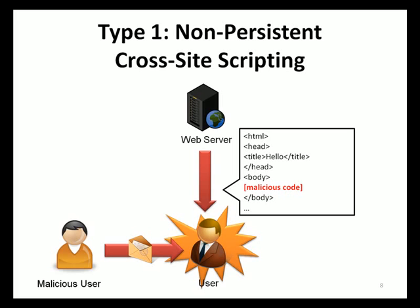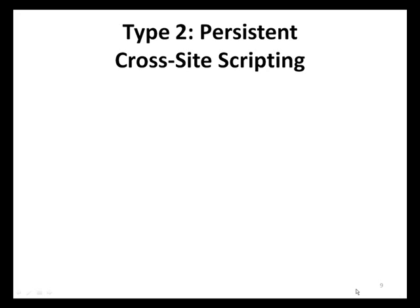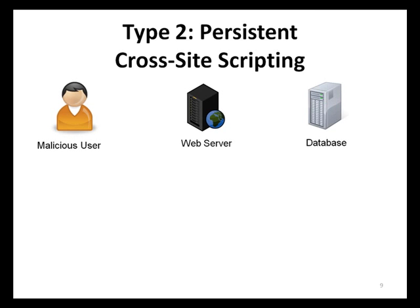The final variant is type 2 persistent cross-site scripting, sometimes referred to as stored or second-order cross-site scripting attacks. This version is the most dangerous because unlike type 1, type 2 cross-site scripting attacks do not require user interaction in order to trigger the delivery of malicious code. In this scenario, we have a malicious user, a web server hosting a vulnerable web-based application, and a database used to store information such as usernames, blog comments, and other user-provided data.